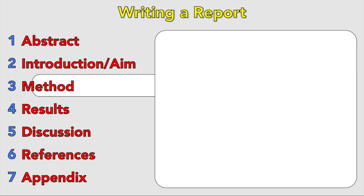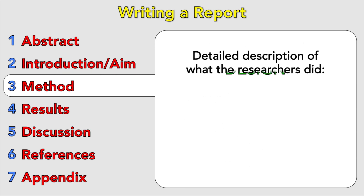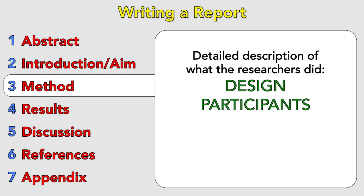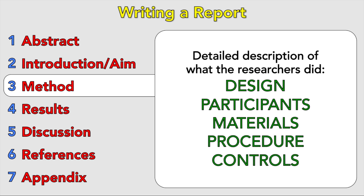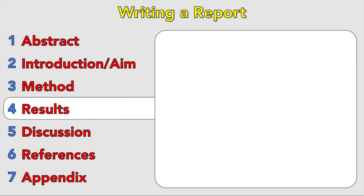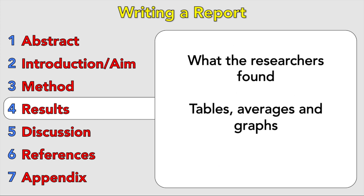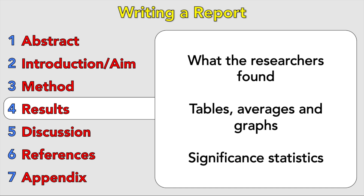The method is a detailed description of what the researchers did. You should include the design type, details about the participants, the materials used, the procedure and any controls — pretty much part B of the video series. The results are what the researchers found, including tables, averages, graphs, and any significance statistics — pretty much everything in part A of this video series.